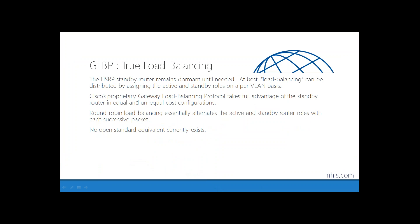The problem with HSRP is that the standby router sits essentially dormant until it's needed — a significant capital investment sitting in the rack just waiting for the primary to fail. The only extent of load balancing HSRP offers is assigning active and standby roles on a per-VLAN basis, which isn't really load balancing in its purest sense. Better still is Cisco's proprietary GLBP — Gateway Load Balancing Protocol — which takes full advantage of the standby router in either equal or unequal cost configuration.